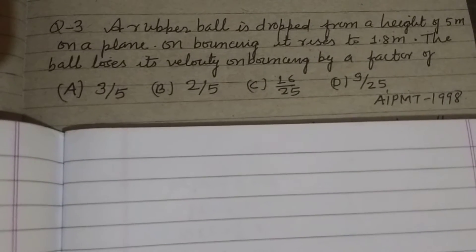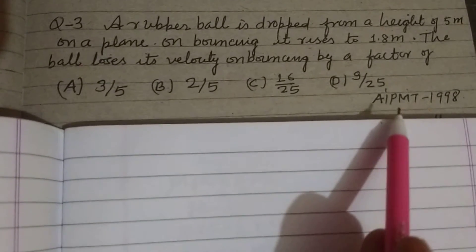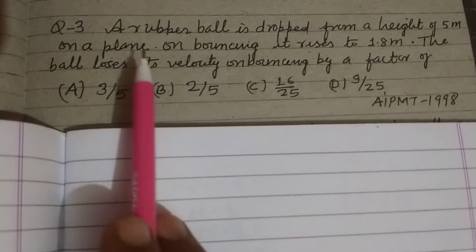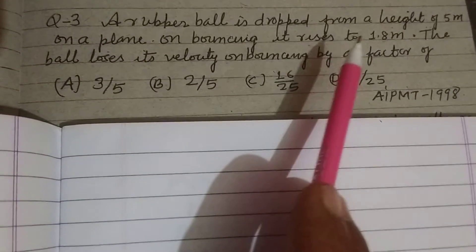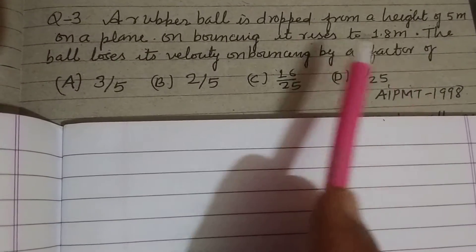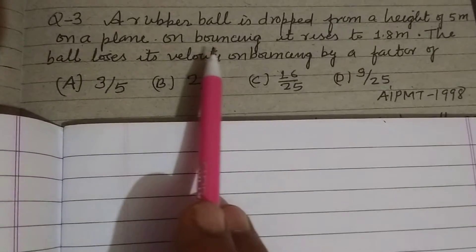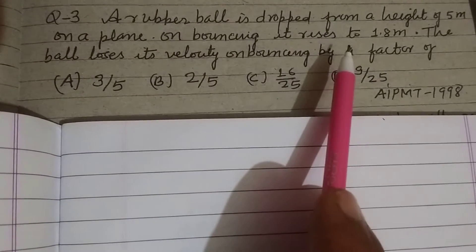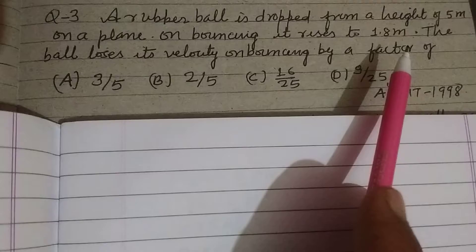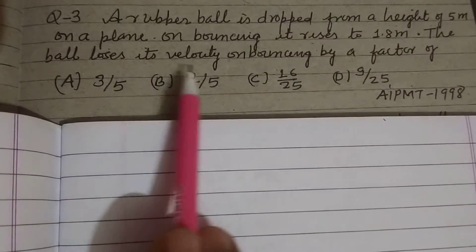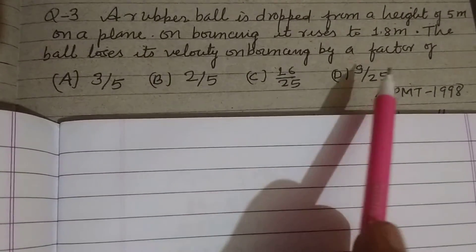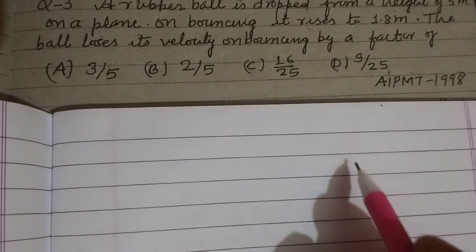Hello students, warm welcome to this YouTube channel. Question from AIPMT 1998: A rubber ball is dropped from a height of 5 meters on a plane. On bouncing, it rises to 1.8 meters. The ball loses its velocity on bouncing by a factor of...